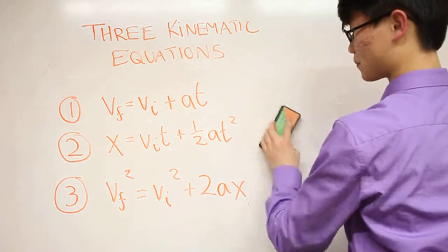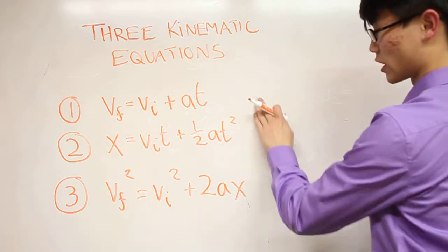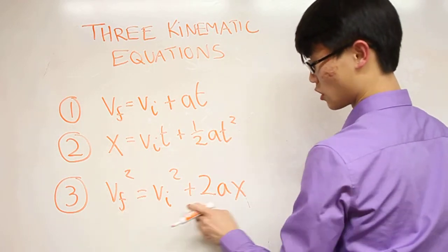Oh, four seconds, sorry. So once again, you're just plugging in numbers. Here you have v_f² = v_i² + 2ax.